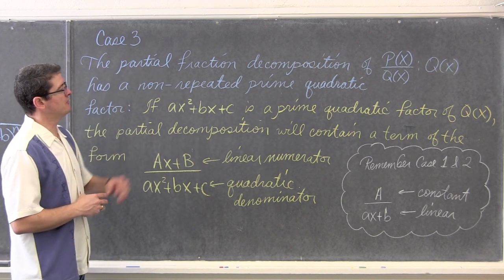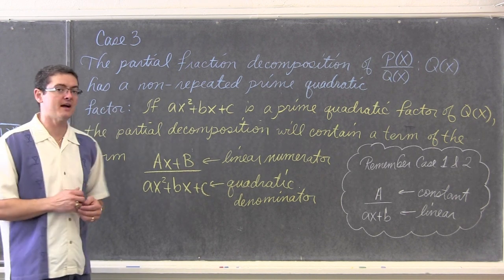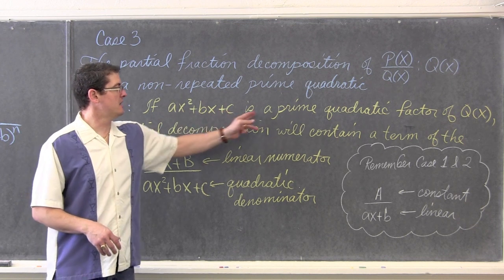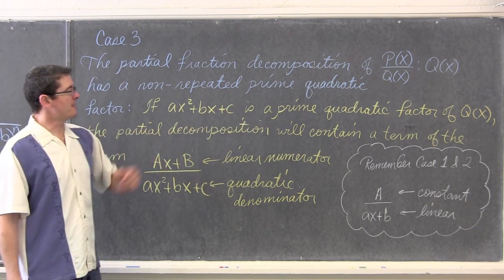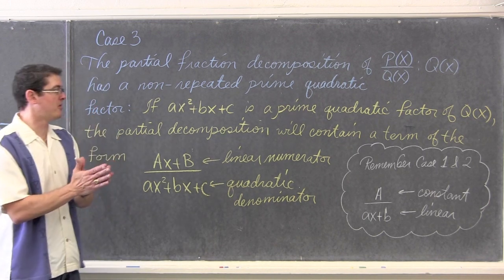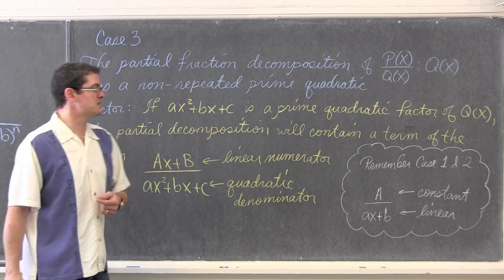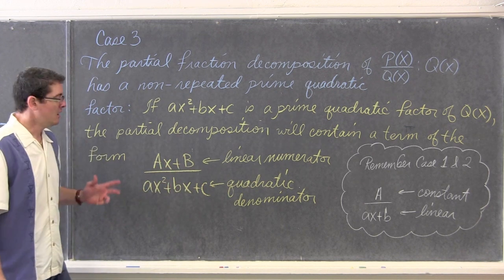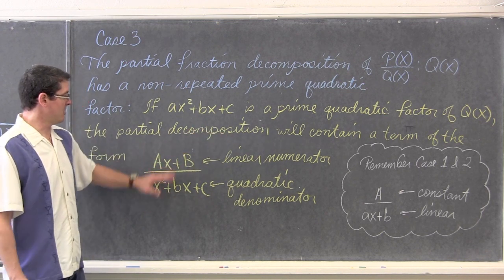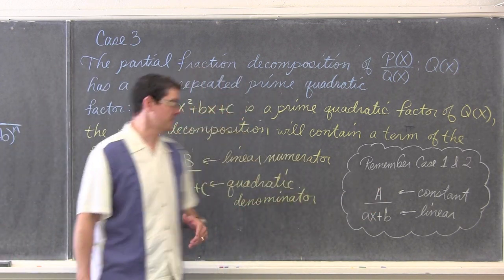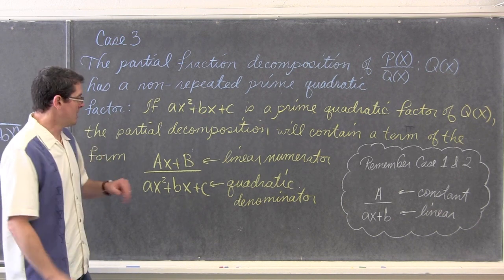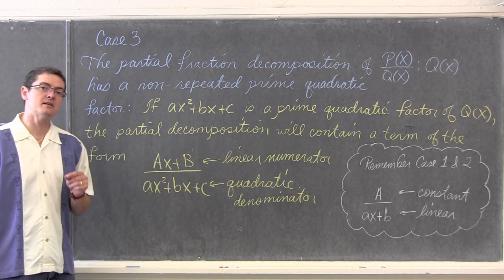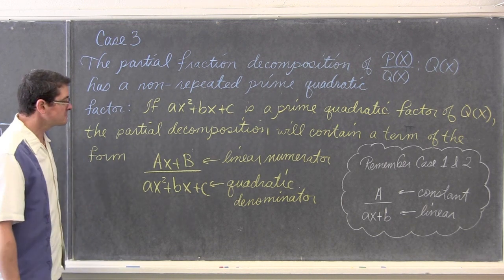The partial fraction decomposition of p over q when q has a non-repeated prime quadratic factor: if ax squared plus bx plus c is a prime quadratic factor of q, the partial decomposition will contain a term of the form ax plus b over ax squared plus bx plus c. Note that when we had linear factors in the denominator, our numerators were constant — a degree one less. Whereas when our denominator is quadratic, ax plus b is a linear numerator, so the numerator has a degree specifically one less than the denominator.